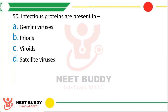Question number 50: Infectious proteins are present in — Option A: Gemini virus. Option B: Prions. Option C: Viroids. Option D: Satellite virus. Infectious proteins are present in — the correct answer is option B, that is prions.